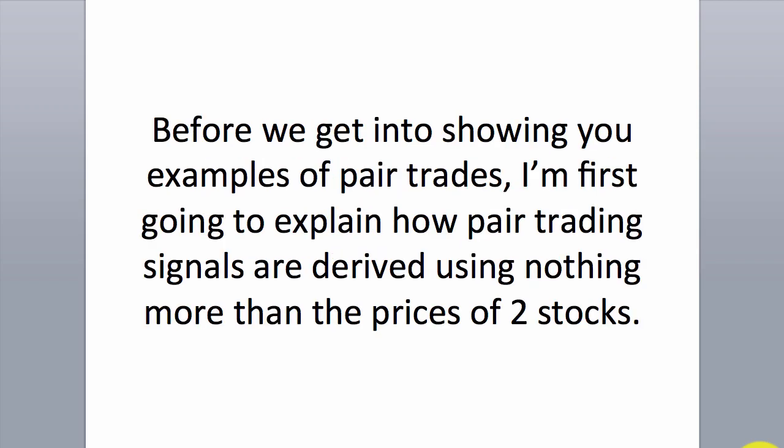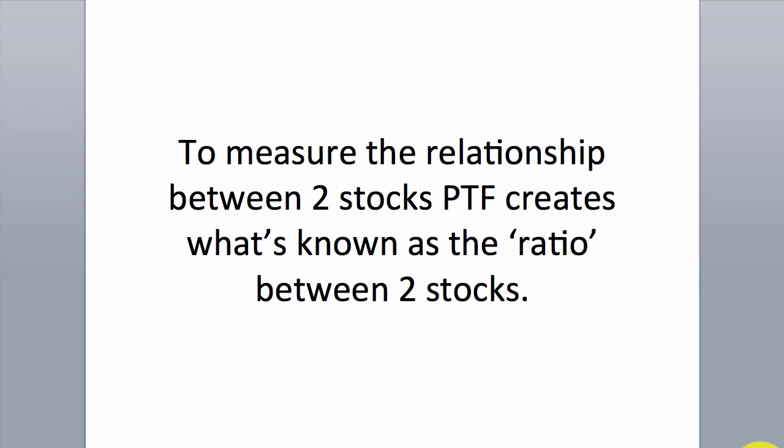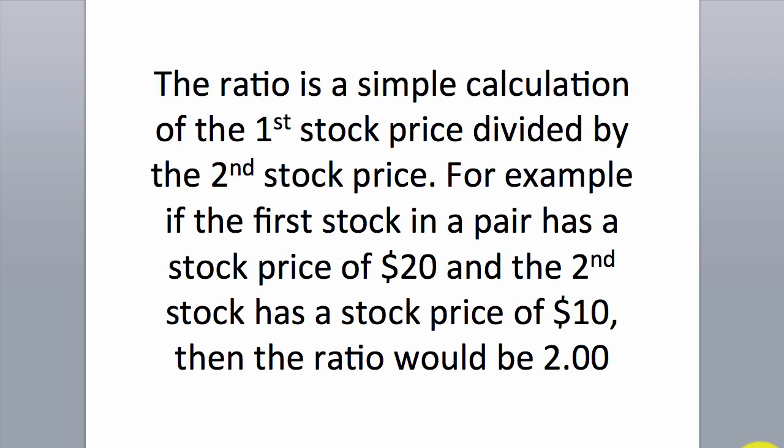Before we get into showing you example pair trades, I'm first going to explain how pair trading signals are derived using nothing more than the prices of two stocks. To measure the relationship between two stocks, PTF creates what's known as the ratio between two stocks. The ratio is a simple calculation of the first stock price divided by the second stock price. For example, if the first stock in a pair has a stock price of $20 and the second stock has a stock price of $10, then the ratio would be 2.0.